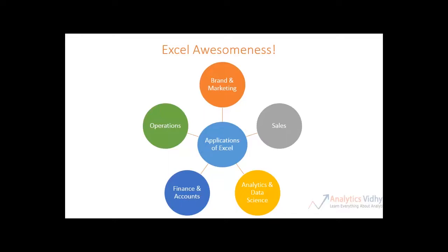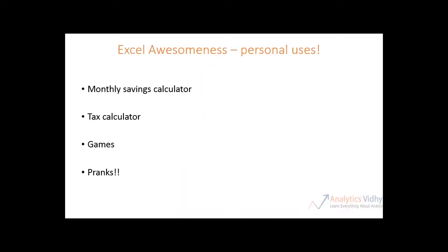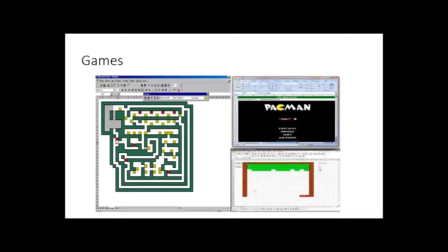Let's look at the applications at a personal front. You can track your earnings and expenses on Excel. Using a calculator, you can quickly check how much saving you have done and whether it is higher or lower than your previous month's saving. You can also create tax calculators, games and pranks in Excel. Here you can see images of games that we can create and play in Excel. Using advanced functionality like VBA, you can design many more games in Excel.